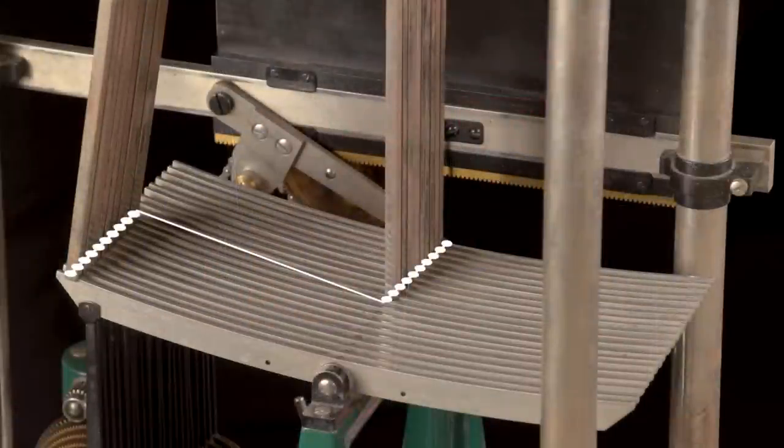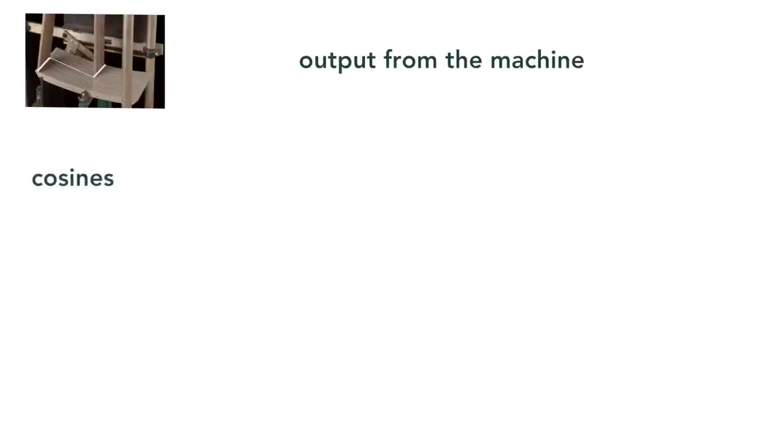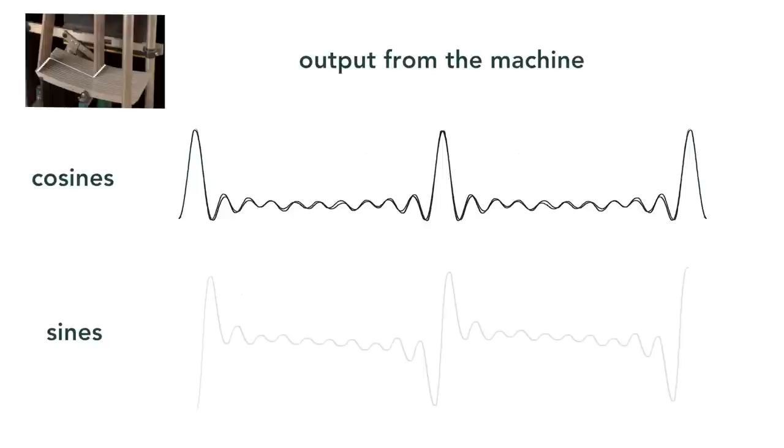If we set the amplitude bars for a square wave and set the machine for cosines, we get this even function. It's even because it is mirrored around the y-axis. And then keeping the amplitude bars the same but setting the gears for sines, we get this odd function. It's odd because it's rotated 180 degrees about the origin.